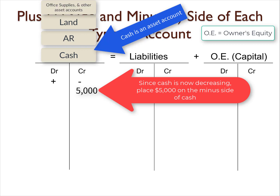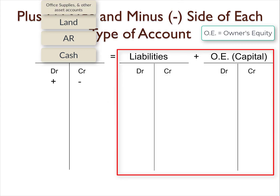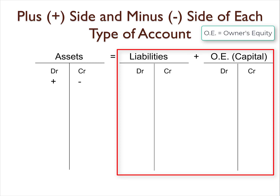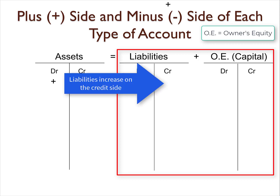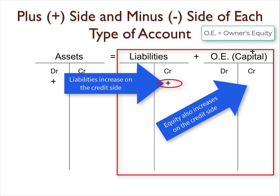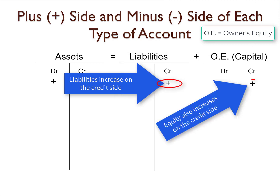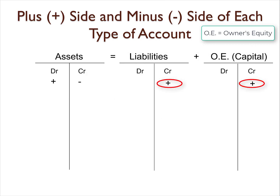Now let's look at the right side of the accounting equation — liabilities and owner's equity. Because liabilities and equity are on the right side of the accounting equation, all liability accounts and equity increase on the right or credit side. Of course, this means that the opposite side, the left side, is the decreased side.